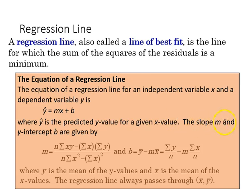The slope m and y-intercept b are given by these equations. The slope is found by taking the sample size n, multiplying it by the sum of xy products, then subtracting the sum of x multiplied by the sum of y. In the denominator, we have n times the sum of x² minus the sum of x, squared.